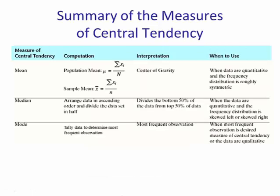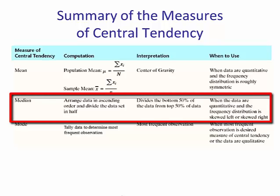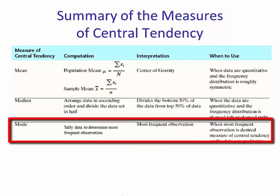To summarize measures of central tendency: use the mean when the data are quantitative and the frequency distribution is relatively symmetric — it provides the best measure of center and is also known as the center of gravity or balance point. Use the median when the data are quantitative and the distribution is skewed left or skewed right, as it divides the bottom 50% from the top 50%. Use the mode when the data are qualitative or categorical.